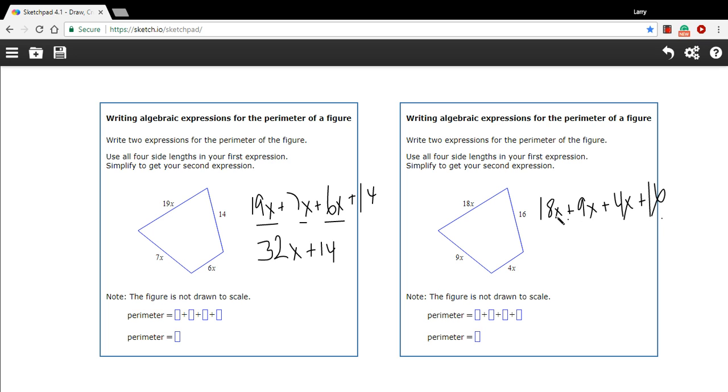Then we can simplify by combining these like terms. Let's see, 18x plus 9x is 27x plus 4x is 31x plus 16. So that's how to write the perimeter of a shape as an algebraic expression. Thank you.